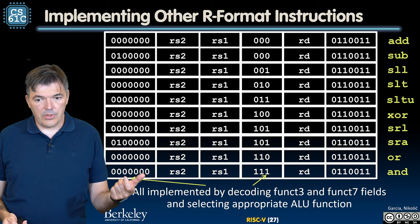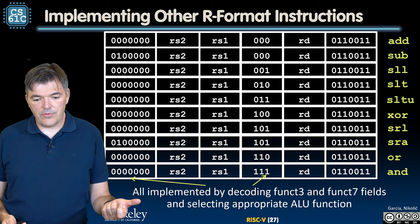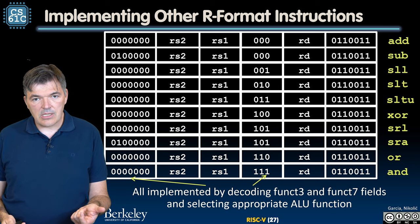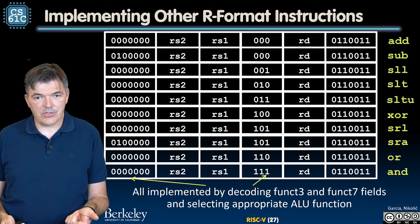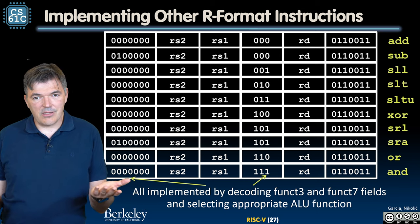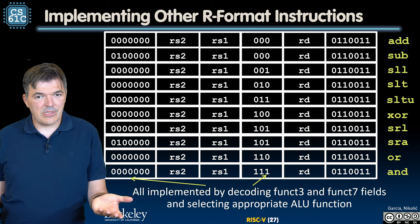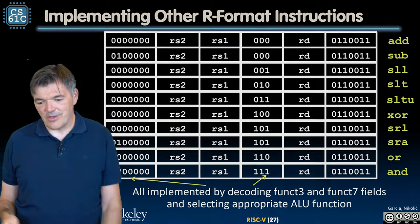We just need to decode the appropriate funct7 and funct3 fields and set ALU to perform appropriate arithmetic or logic operation. That's it. Let's, in the next module, see how we expand this datapath to support another instruction type. See you there.